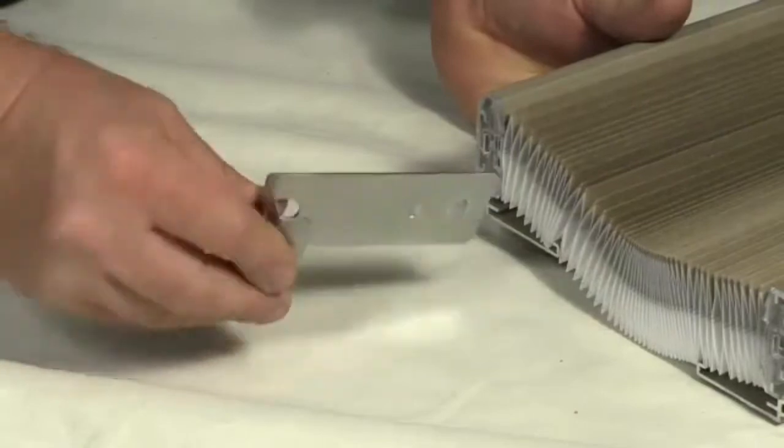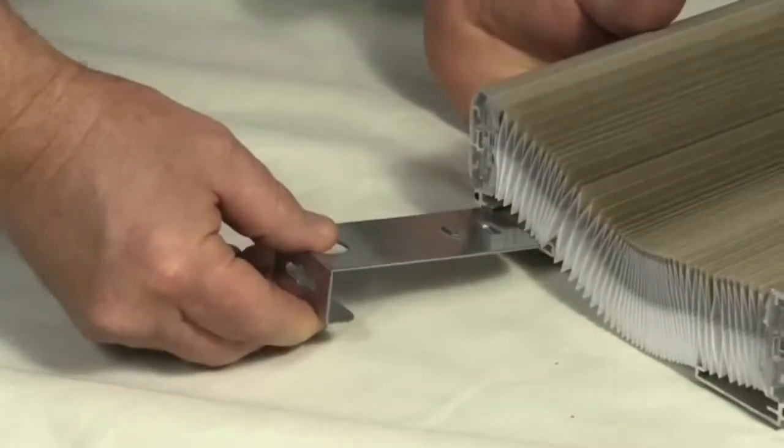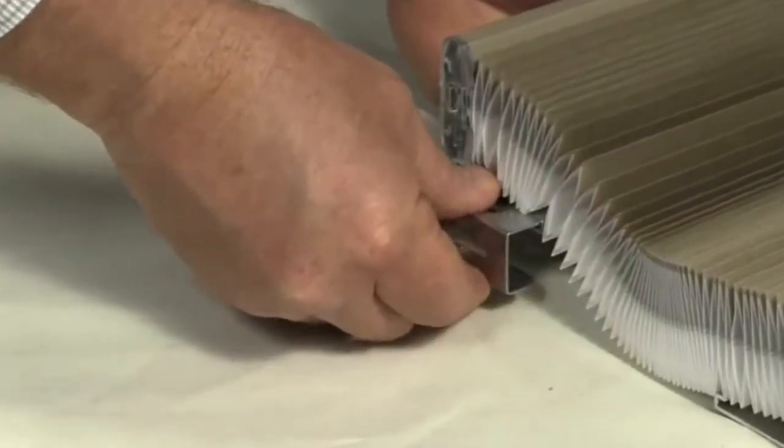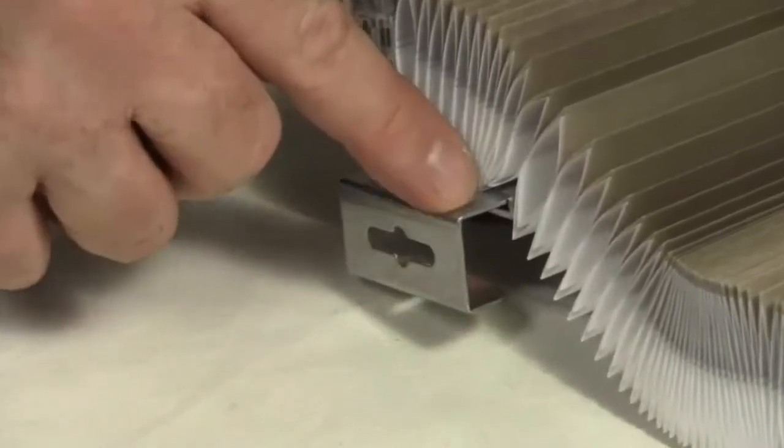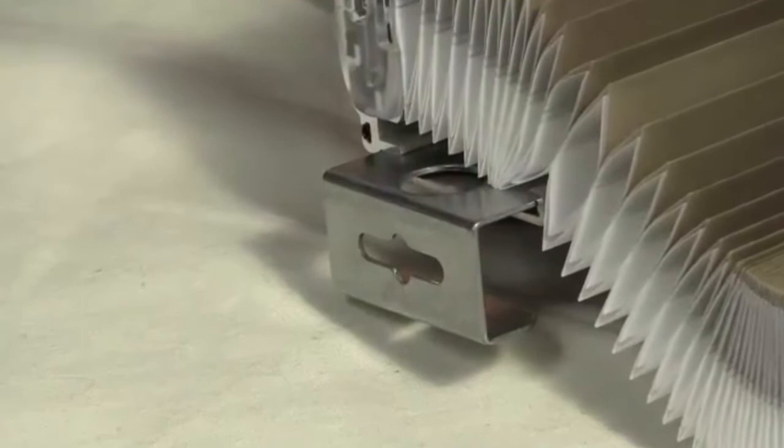Then, insert the stationary rail bottom bracket into the bottom of each stationary rail. The mounting flange should face away from the fabric stack. Leave around 15mm exposed to allow easy access for fitting.